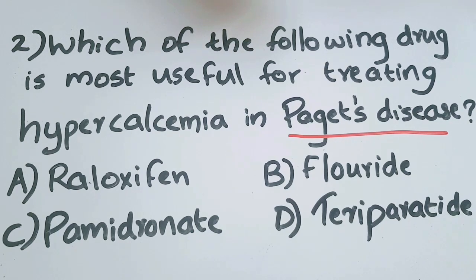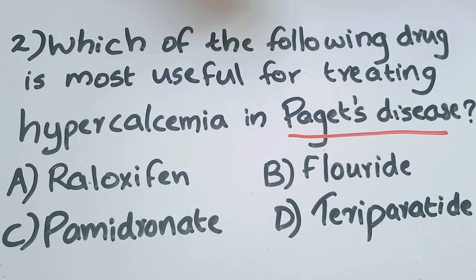In Paget's disease, the body's normal bone demineralization process is altered or impaired, causing bones to become weaker and more fragile. The main drugs used for treating hypercalcemia or Paget's disease include bisphosphonates and calcitonin. Bisphosphonates are mainly used to strengthen bone and are the first-line treatment in Paget's disease.